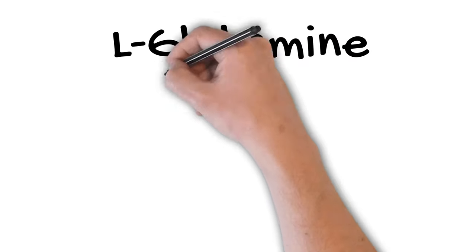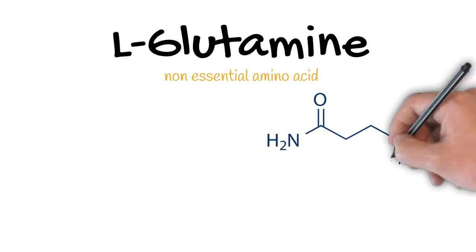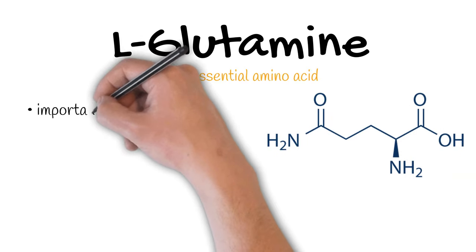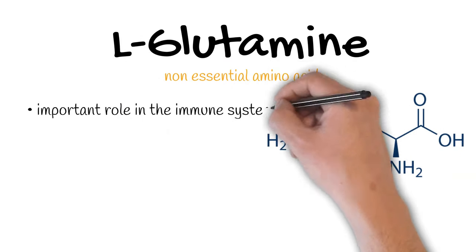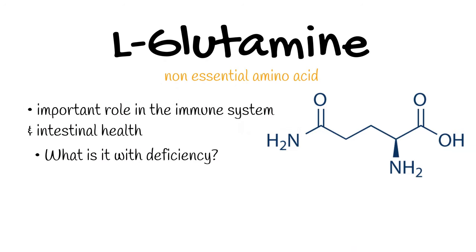L-glutamine, simply called just glutamine, is an amino acid found naturally in the body and in food. It has an essential role in the immune system and intestinal health. But what happens if we don't get enough? And where can we get it? Well, let's check out!